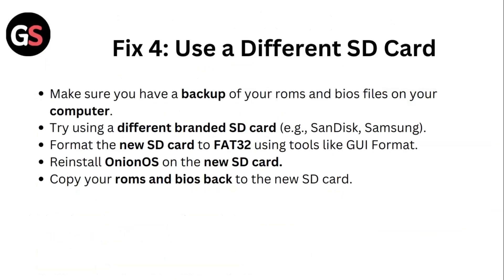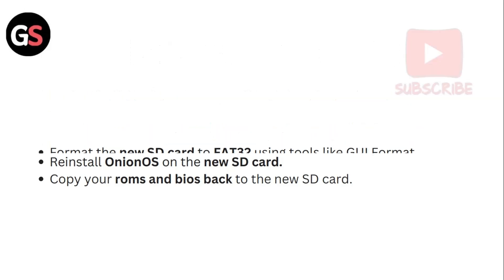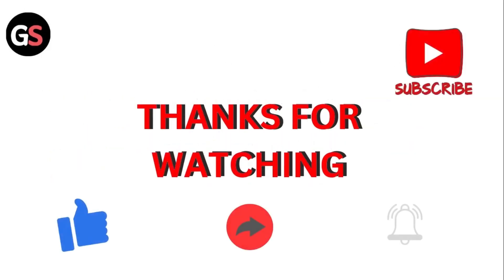Fix four: Use a different SD card. Make sure you have a backup of your ROMs and BIOS files on your computer. Try using a different branded SD card such as SanDisk or Samsung. Format the new SD card to FAT32 using a tool like GUIFormat. Reinstall Onion OS on the new SD card, then copy your ROMs and BIOS back to the new SD card. Thank you for watching — I'll see you next time.